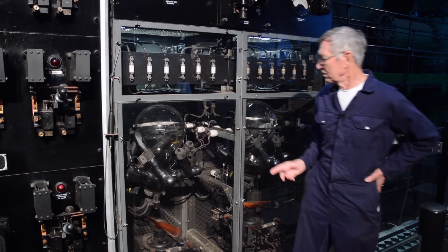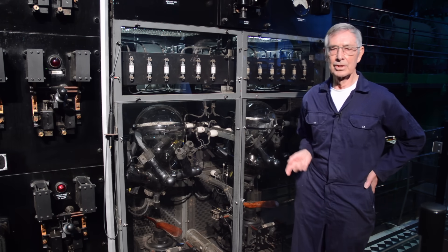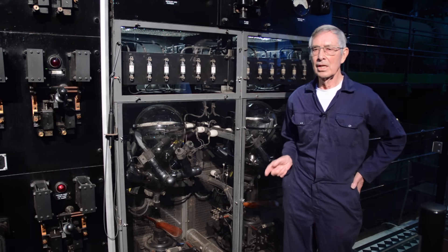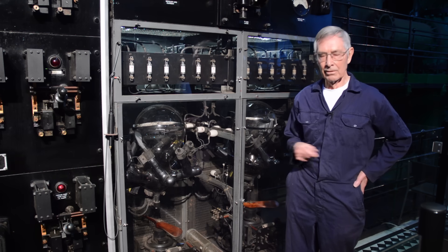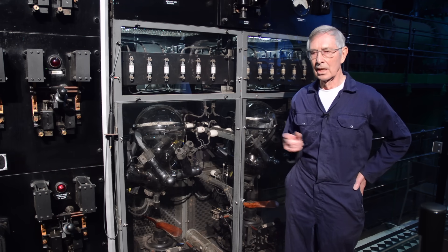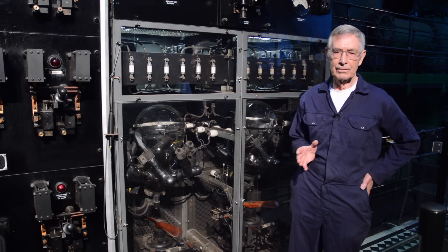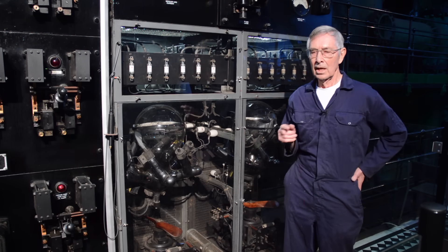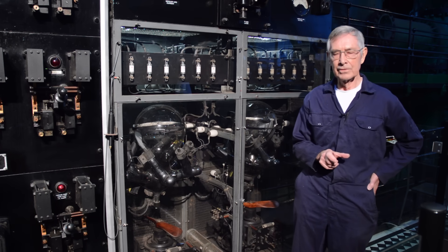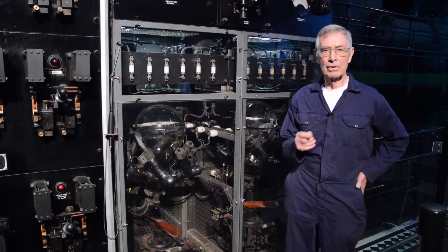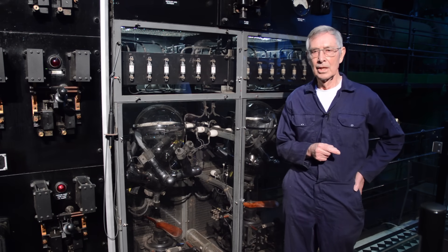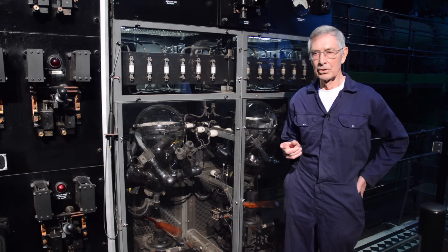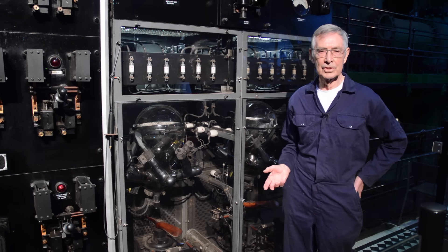Rectifiers work because they will only pass current in one direction. AC reverses current continually, in our case in the UK, 50 times a second. If you apply an AC voltage to a rectifier, it will cut out the reversed half of the cycle, so you get current that flows only in one direction. That is a form of DC.